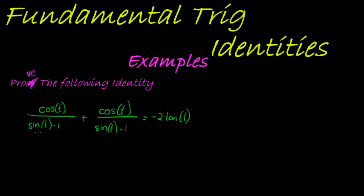Prove the following identity: that cos t over sin t minus 1 plus cos t over sin t plus 1 is equal to negative 2 tan t. Now, one thing that you need to notice is that in this case we have a complex expression equal to a simple expression. That's an identity.